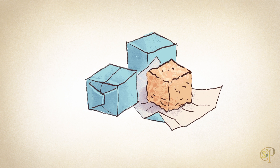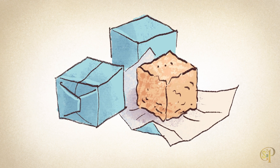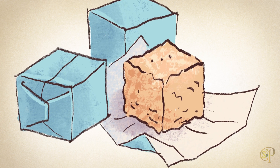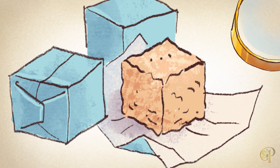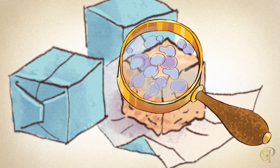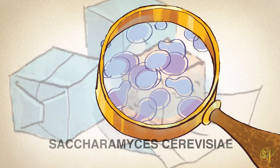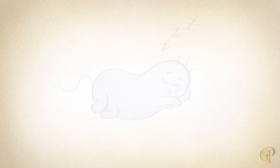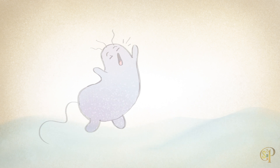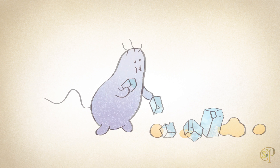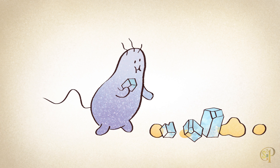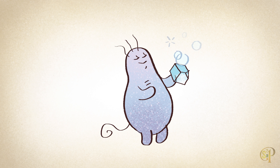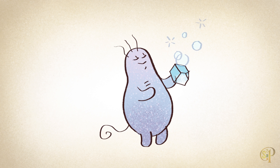Another popular leavening agent is baker's yeast, usually found in tiny paper envelopes in the baking aisle. Inside of these packets is a yeast that scientists call Saccharomyces cerevisiae. When you wake up this yeast by stirring it into warm water, it is hungry to eat sugars and starches. This is a fermentation process in which the yeast breaks down the carbohydrates in the flour. Carbon dioxide is produced in this fermentation, causing the bubbles to make the bread rise.